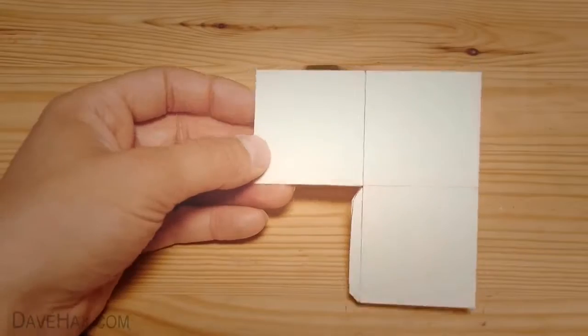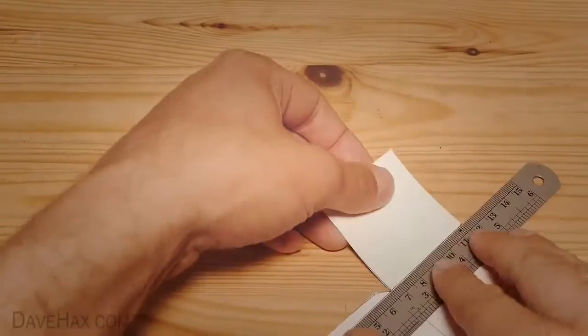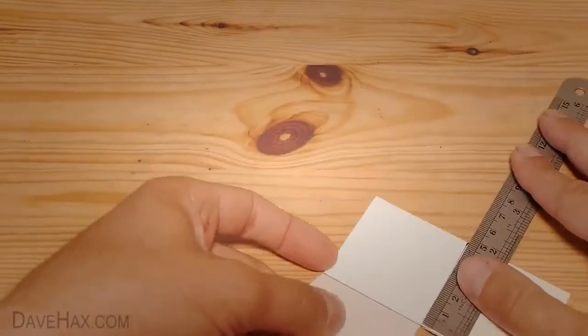You should now have something which looks like this. Next, use a ruler to help bend the card into shape.